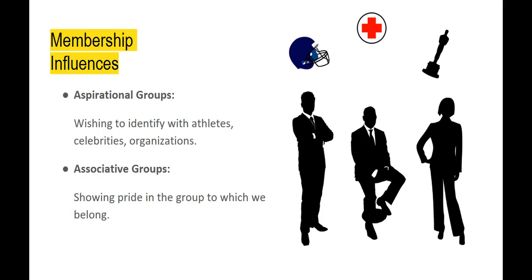There's also another kind of influence: the associative group. That's when we buy a product to show pride in a group that we already belong to — it might be wearing your college t-shirt around town, or carrying the free tote bag you got at a conference, or wearing an anime t-shirt to show that you're into anime. That's an associative group, and sometimes you'll buy a product just to show your association with the group. Other times the group itself makes merchandise available or endorses it, providing a way for you to show your association or pride in that group.